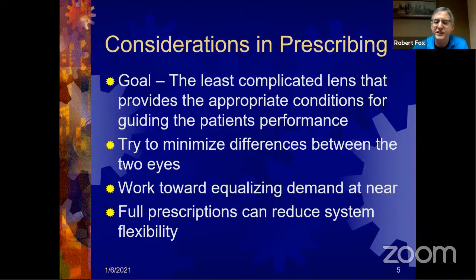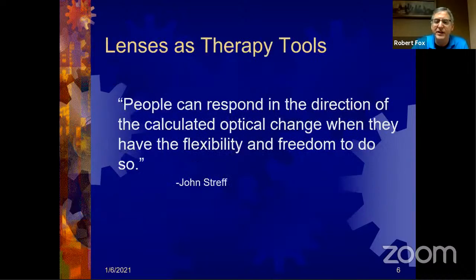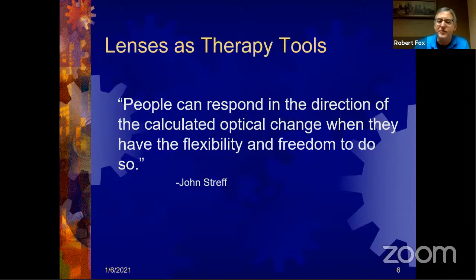Even with a slab-off lens, once you get above a certain amount of anisometropia, that doesn't work well either. When in doubt, under-correct. Here's a quote from the late, great John Streff: 'People can respond in the direction of the corrected optical change when they have the flexibility and freedom to do so.' You want to avoid full plus prescriptions and full anisometropic prescriptions — all they'll do is lock a patient into a pattern that's not working well for them.